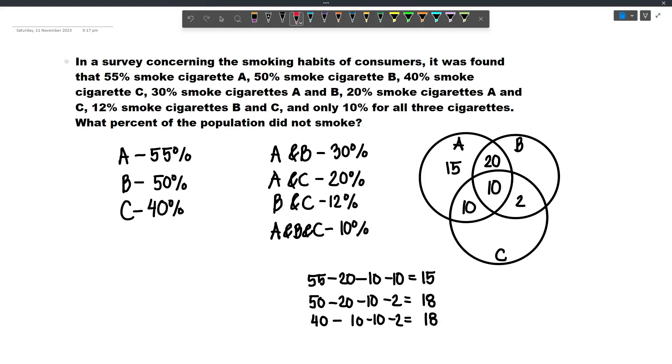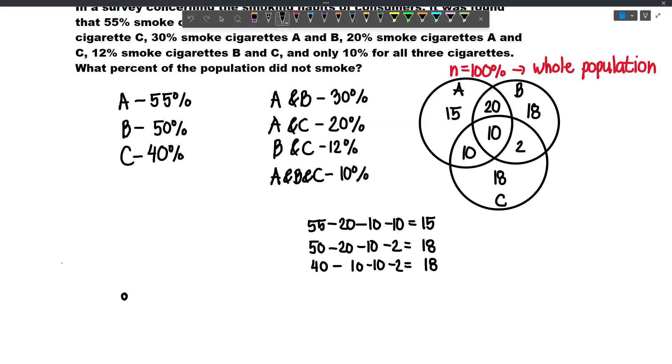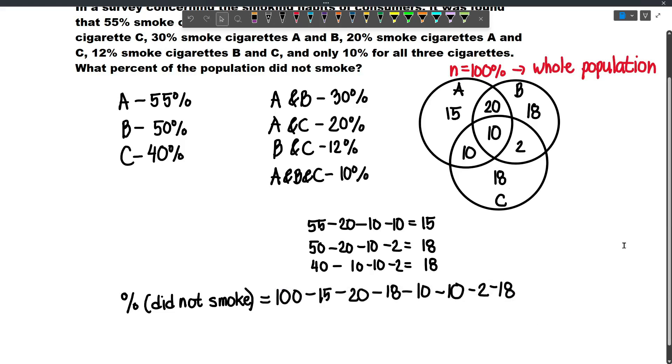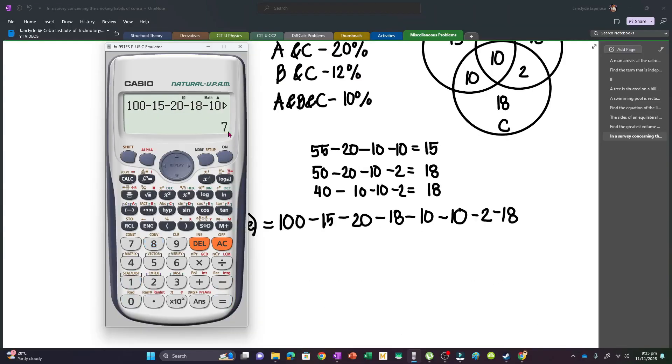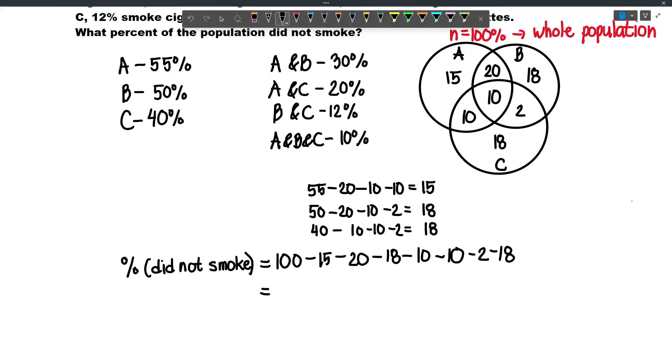Now the whole population is 100%, and so the portion of the population who did not smoke will be 100 minus 15 minus 20 minus 18 minus 10 minus 10 minus 2 and then minus 18. And so this will be 7%. And so that will be our answer. And so this 7% will be outside because this percentage of the population does not smoke anything.